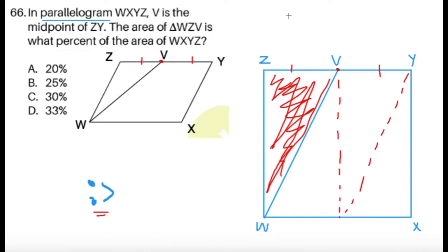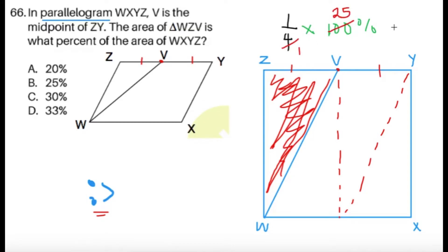One-fourth is the answer, but we have choices in percent. Converting: one-fourth times 100 gives us 25%. So this gives us choice B as our answer.